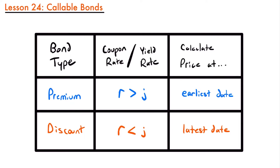When calculating the price of a callable bond, it is best to choose the price that is most beneficial for the buyer — meaning the lowest or cheapest price. To determine when to calculate its price, all you need to know is this table. If the bond is going to be sold at a premium, meaning the price is greater than the face value and the coupon rate is greater than the yield rate, then you want to calculate the price at the earliest possible redemption date.